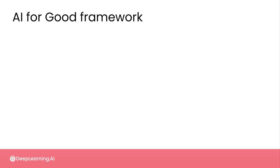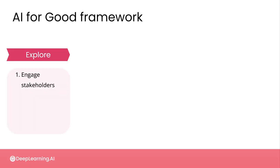In general, AI for Good projects, like pretty much any project, happen in a set of stages or phases. I've broken up the project lifecycle into four phases. The first is an explore phase, where you're connecting with stakeholders, defining the problems that you want to work on, evaluating feasibility, and determining whether AI can add value as part of a solution.